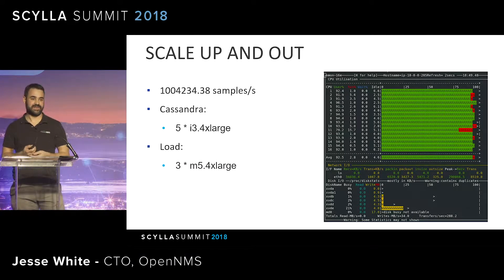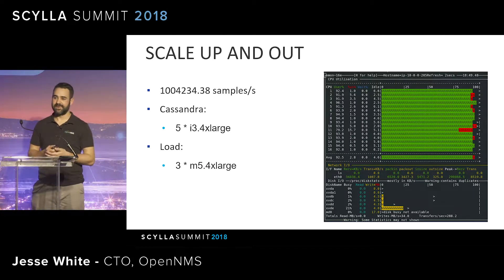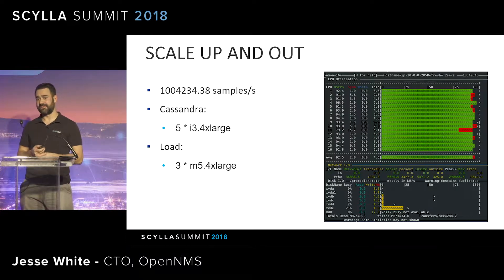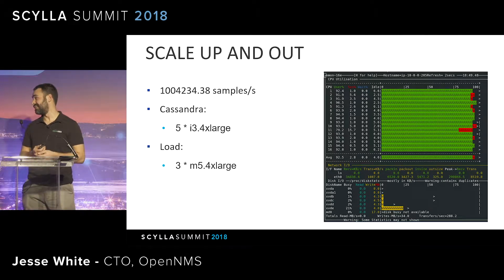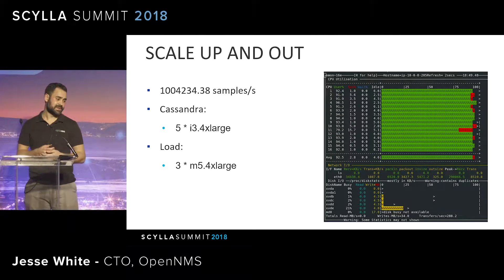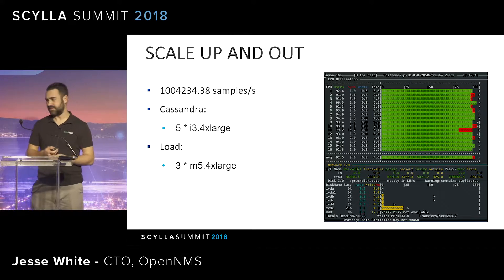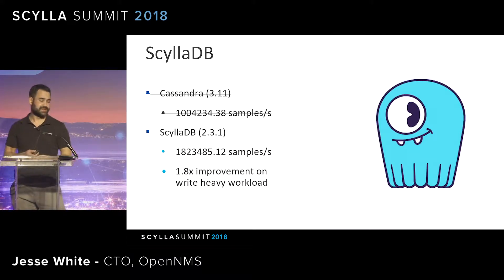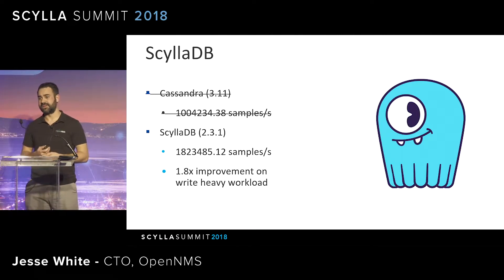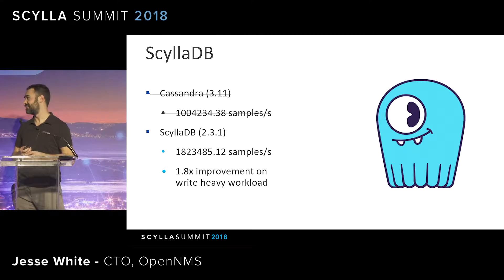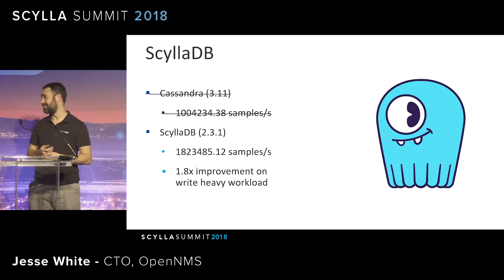Let's talk performance. Here's a case where I set up a deployment on AWS with a write-heavy workload, just trying to insert as many samples as possible. We set up Cassandra on five I3 4x-large instances, with several systems generating load and inserting samples. With that system we were able to get just over a million samples per second inserted. With a similar environment running Scylla 2.3.1, we were able to get almost double — 1.8 times the results — with almost no changes at all. Just out of the box, swapping Cassandra for Scylla, we got almost 2x throughput.